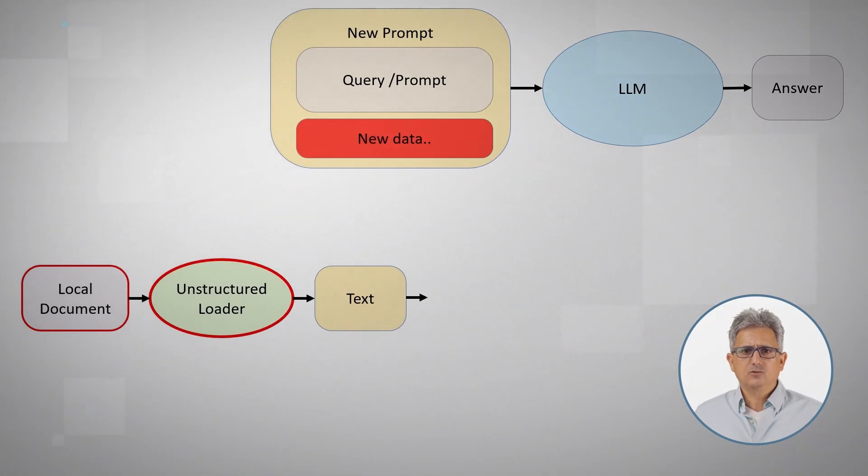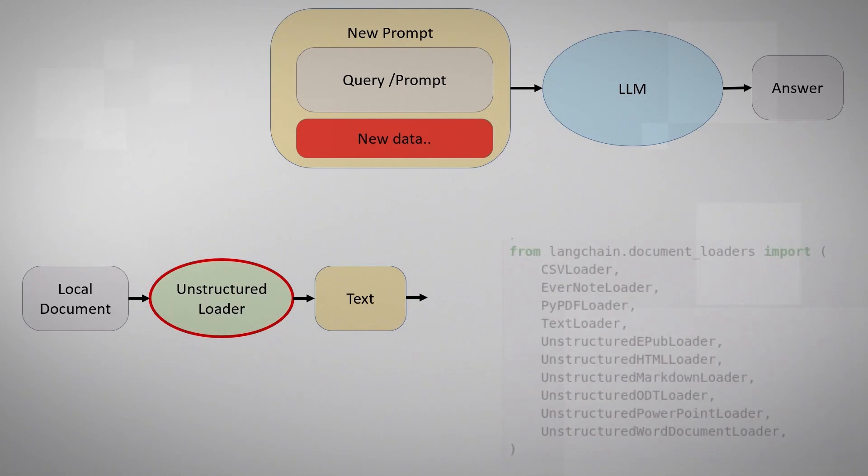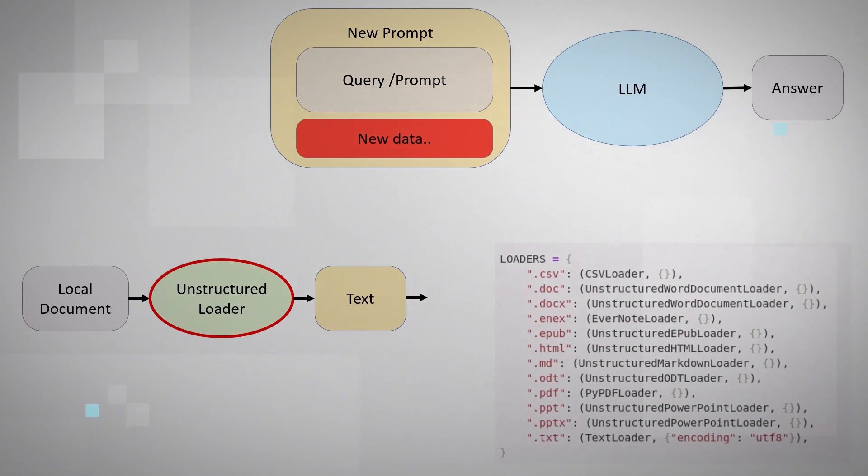So we need an unstructured loader that could read whatever format we have and convert it to plain text. The great thing about this notebook is that you got the code to deal with many of these options. You can see that we are using the document loaders from Langchain and we choose which loader to use based on the file's suffix.